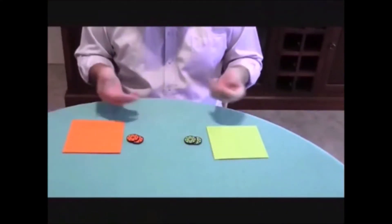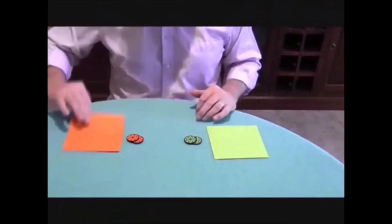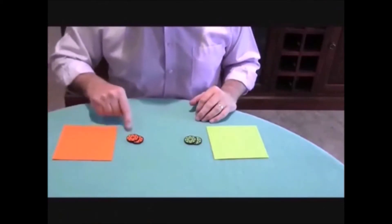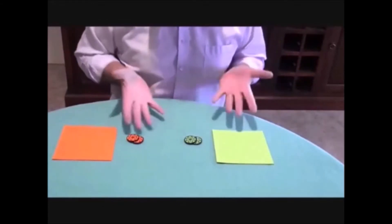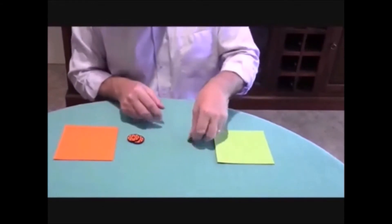If you've been to the casino you will know that these are poker chips. Now I've got an orange sheet of paper with two orange poker chips. Over here there's a green sheet of paper with two green poker chips.